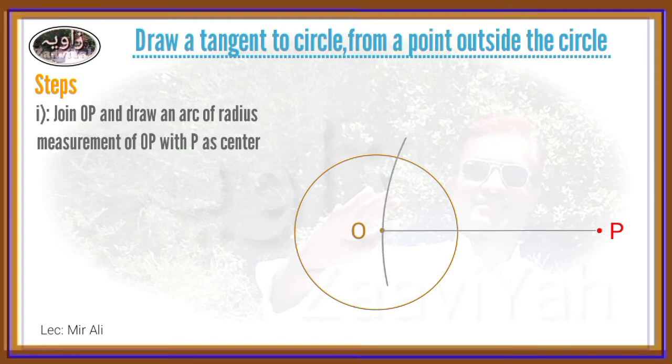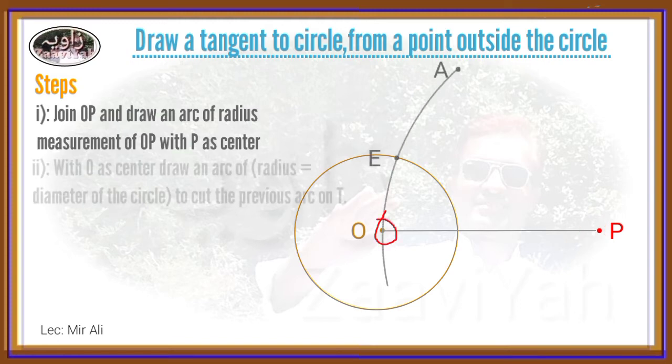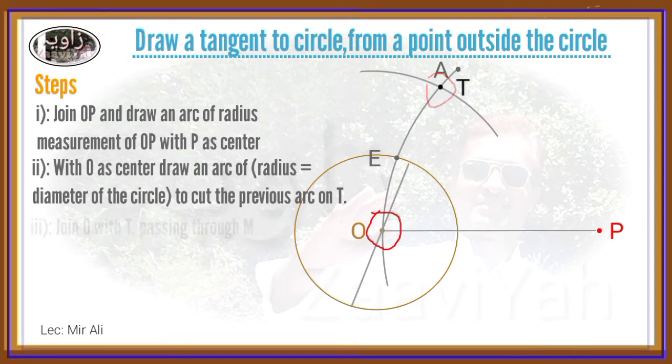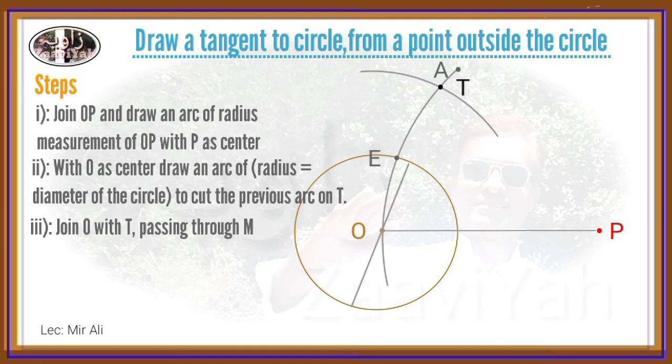With O as center, with radius of the circle as diameter, the arcs intersect. The arcs intersection point T, the circle point M.